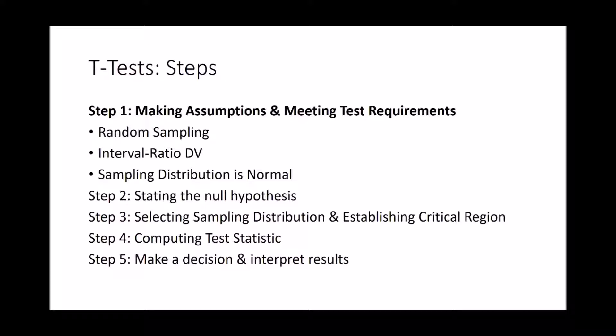For step one, these are our basic assumptions of a t-test, and we have to meet them. We're not going to talk about these every single time — they're assumed. For a t-test, we need to make sure we're doing random sampling, some sort of probability sampling. We need to make sure the dependent variable is interval-ratio, and we assume the sampling distribution is normal. We have to ensure our sample is random and that the dependent variable is interval-ratio. We'll make these assumptions for all three types of t-tests.